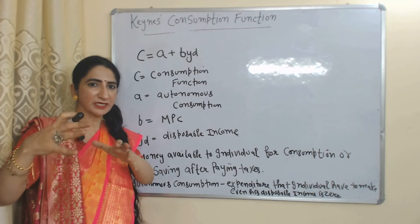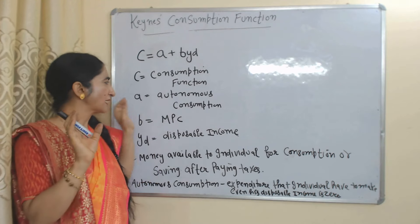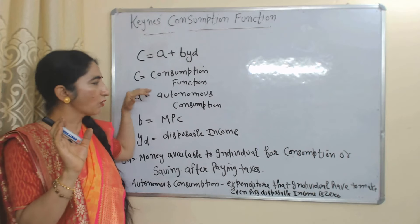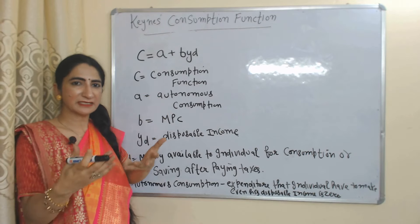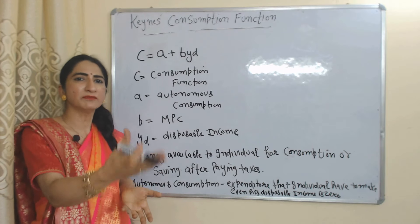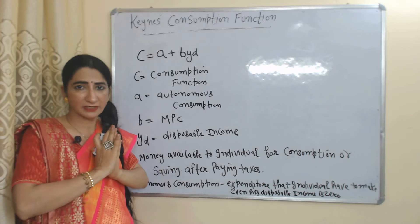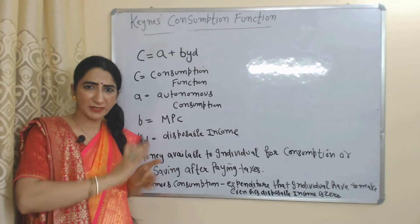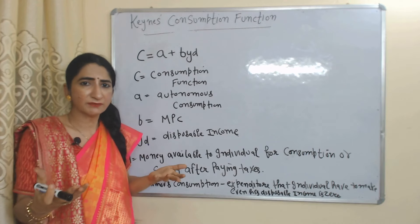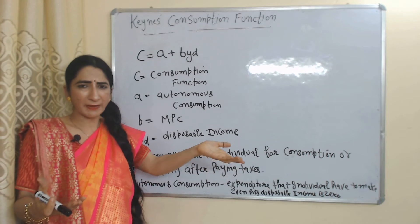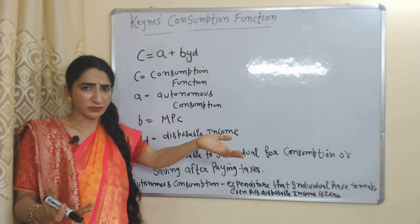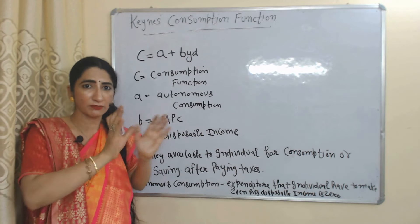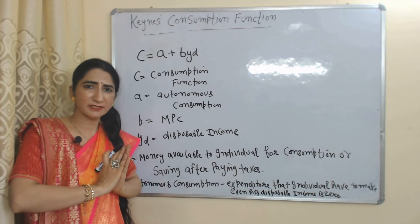MPC, or marginal propensity to consume, tells us how much consumption increases due to an increase in income. Autonomous consumption, represented by a, means expenditure that an individual has to make even when disposable income is zero. For example, we have to make expenditure on food even when our income is zero — we can use past savings or take loans, but we must spend on food.